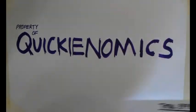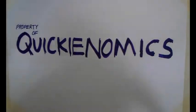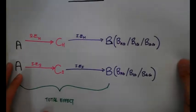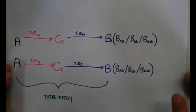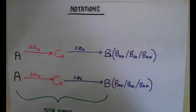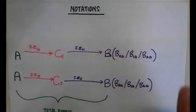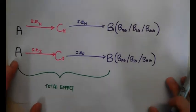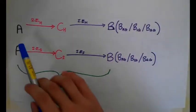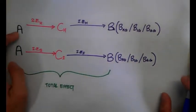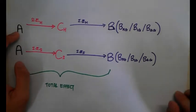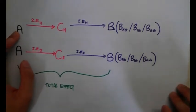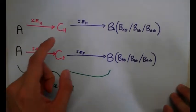Let's start with some notations first. In the previous video, we have already learned about the budget constraints and how we should be identifying the points on the graphs. Just to take note, the initial equilibrium would be point A. And after the substitution effect, we will reach point C.